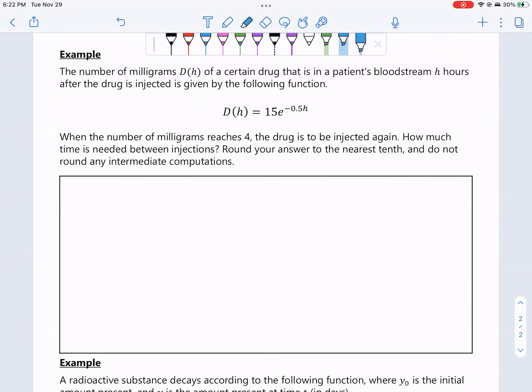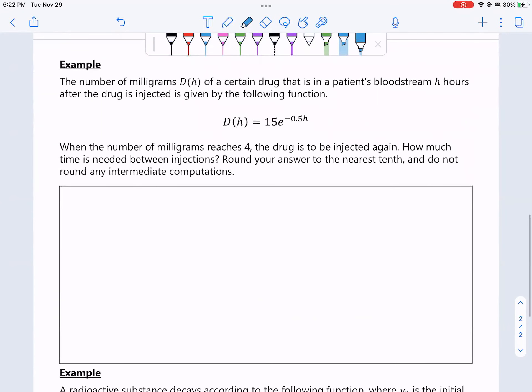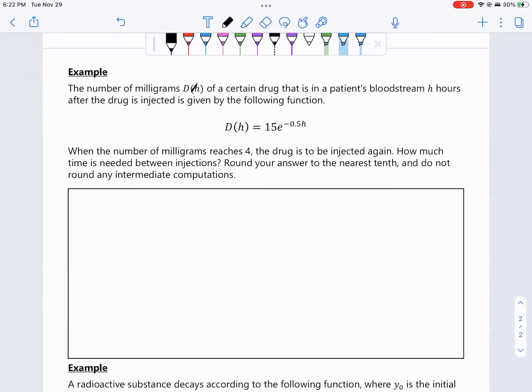It's a lot of the same math over and over and over again. Just the same math in different ways. Alright. So this example here, it doesn't really fit anywhere else. This is the best place I could put it. This one's taken directly from ALEX. Let's talk about it. It doesn't use, it doesn't look like the other problems in the chemistry section. But it had to go somewhere. The number of milligrams D of a certain drug that is in a patient's bloodstream H hours after the drug is injected is given by the following function. D of H is equal to 15e raised to the negative 0.5H. When the number of milligrams reaches 4, the drug is to be injected again. How much time is needed between injections? Round your answer to the nearest tenth. Do not round any intermediate computations.